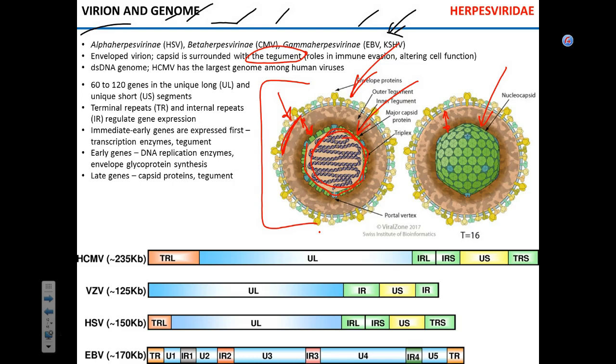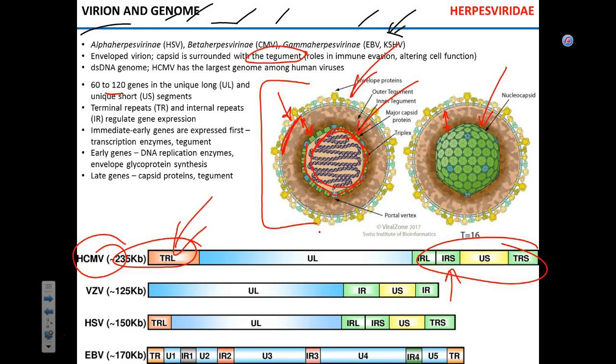Some strains of HCMV actually have 180 genes, so 120 is an underestimate. There are also terminal and internal repeats at the ends of the genome whose function is to regulate gene expression. A unique feature of herpes viruses is that they have several groups of genes expressed at different times.